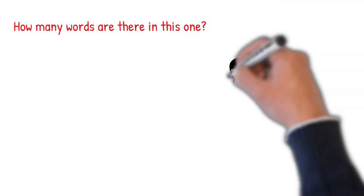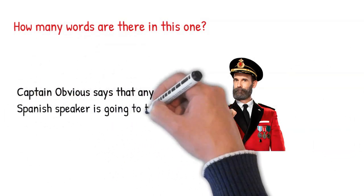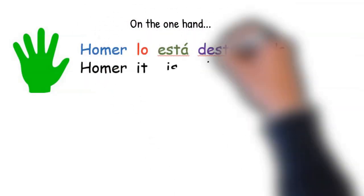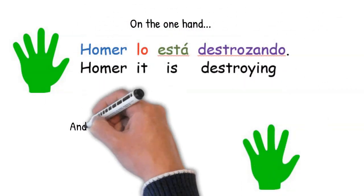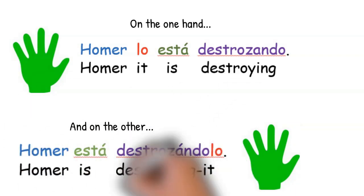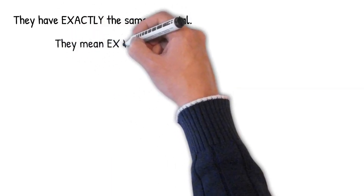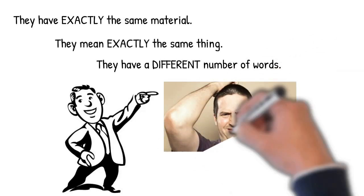How many words are there in this one? Pretty much any Spanish speaker is going to tell us that the answer is three. On the one hand, we've got the sentence Homer lo está destrozando. And on the other, we've got the sentence Homer está destrozándolo. These sentences have exactly the same material, and they mean exactly the same thing. The problem is that they have a different number of words, and that's confusing.